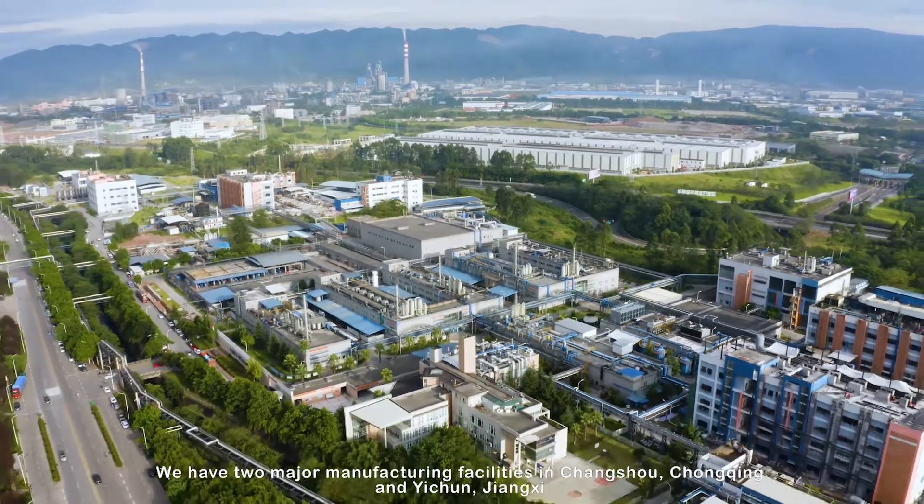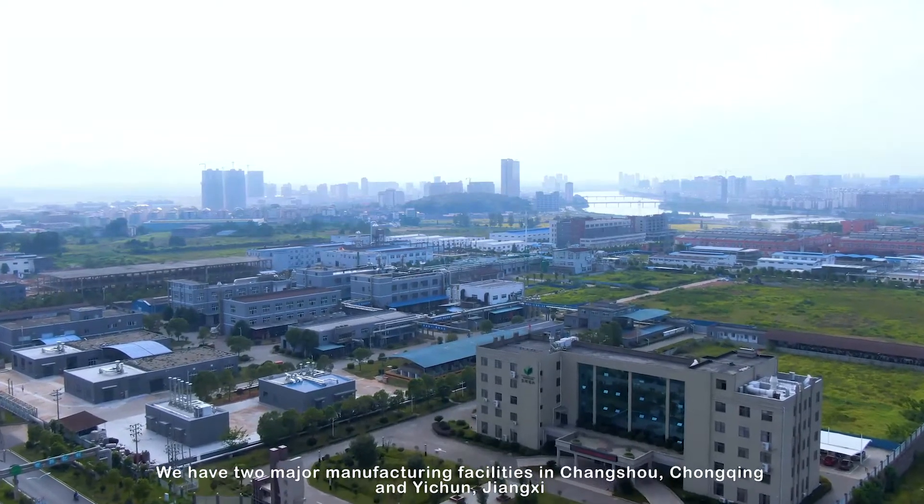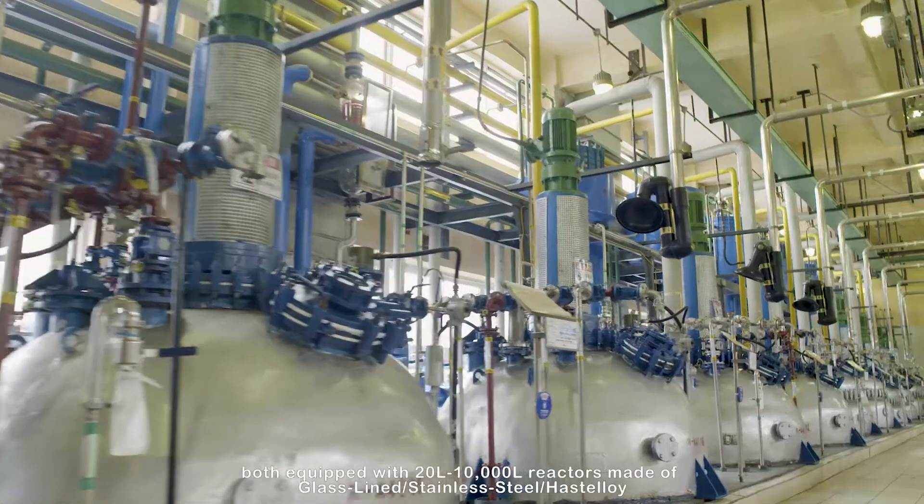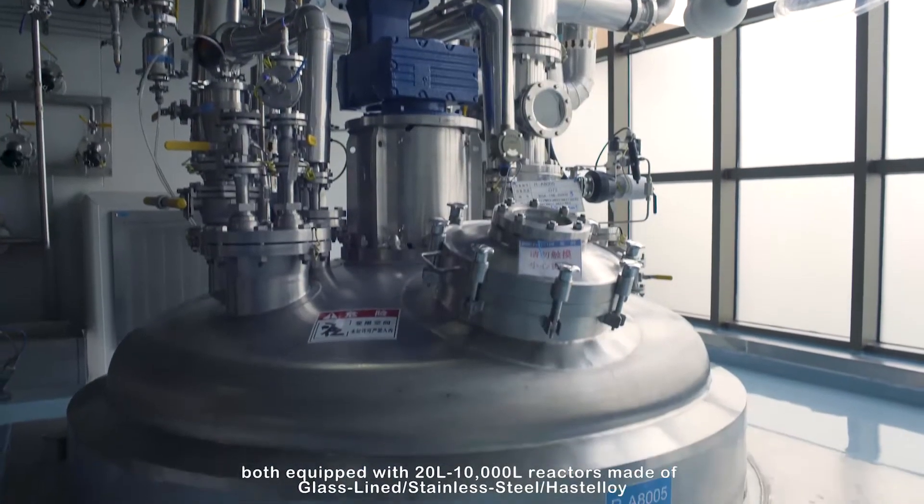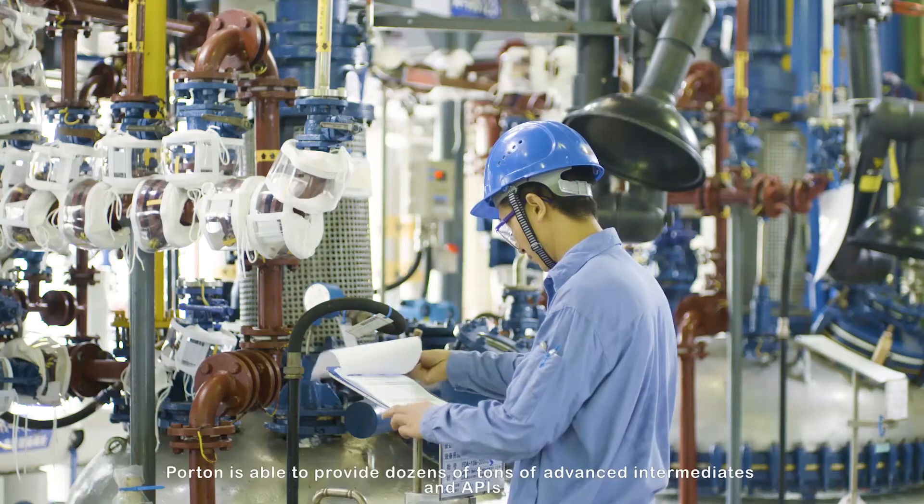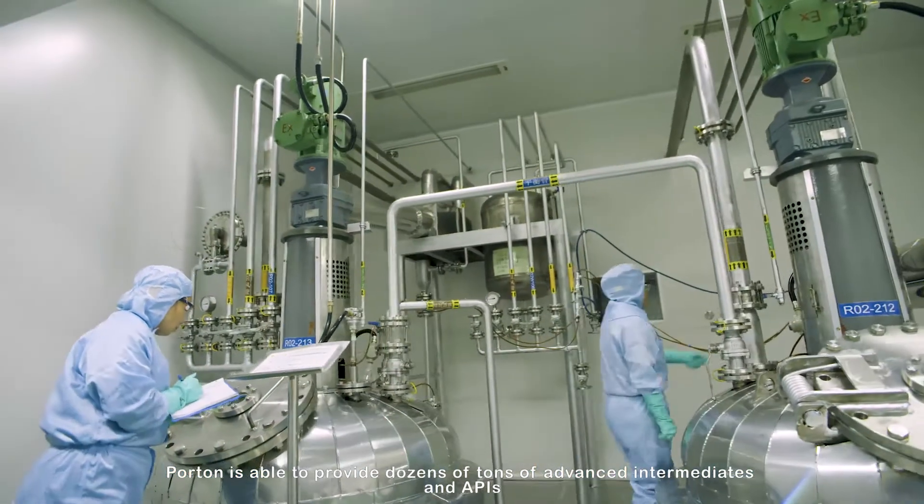We have two major manufacturing facilities in Changshou, Chongqing, and Yichun Jiangxi, both equipped with 20-liter to 10-thousand liter reactors made of glass-lined, stainless steel, hastelloy. With a total capacity of more than 1,200 cubic meter, Porton is able to provide dozens of tons of advanced intermediates and APIs.